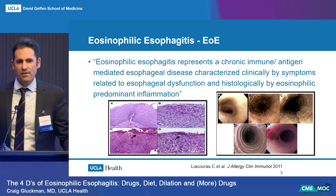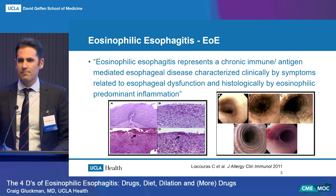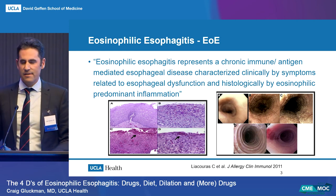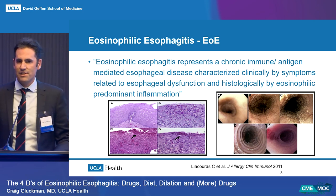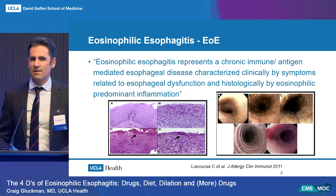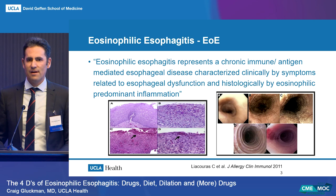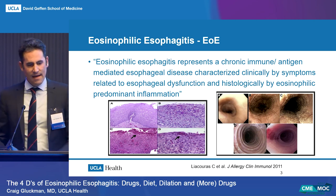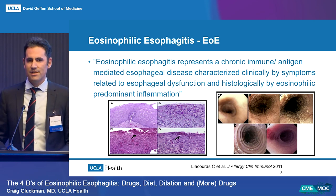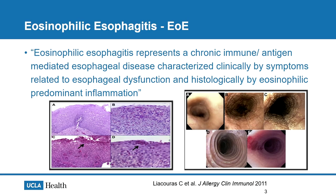Here is the standard definition of eosinophilic esophagitis. It represents a chronic immune antigen-mediated esophageal disease characterized clinically by symptoms related to esophageal dysfunction. In adults they present with dysphagia and food impactions; in the pediatric population, failure to thrive, vomiting, and abdominal pain. Histologically, it is characterized by eosinophilic predominant inflammation, with features like basal zone hyperplasia and lamina propria fibrosis.